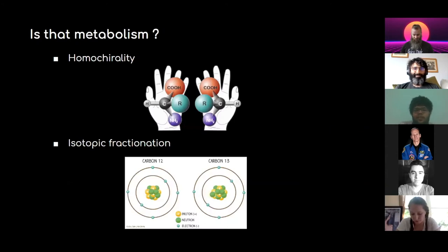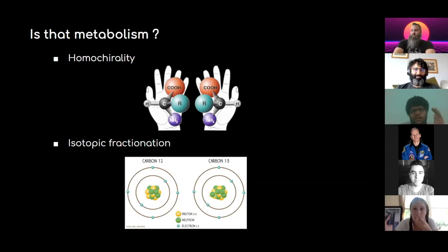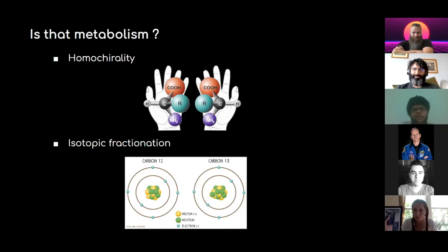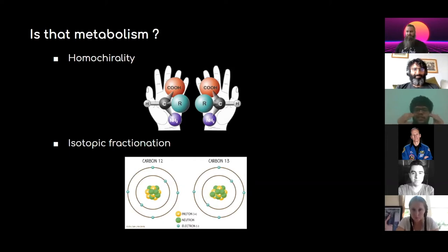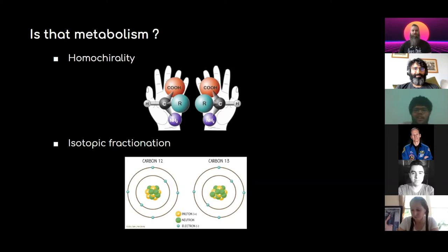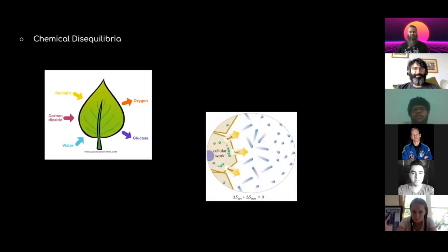Or we can look for metabolism. One such property is homochirality. Just as baseball players are either left-handed or right-handed, life also prefers a certain handedness of molecules — all amino acids in our body are left-handed and all sugars are right-handed. We can also look for isotopic fractionation: if an environment has equal amounts of carbon-12 and carbon-13 with no life, their ratio stays equal. But once life is introduced, the amount of carbon-12 reduces because it's used up by life, while carbon-13 is left out. Life is very selective, and these selectivities can act as a biosignature.